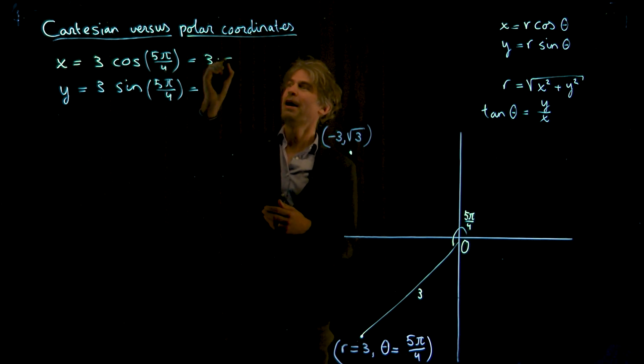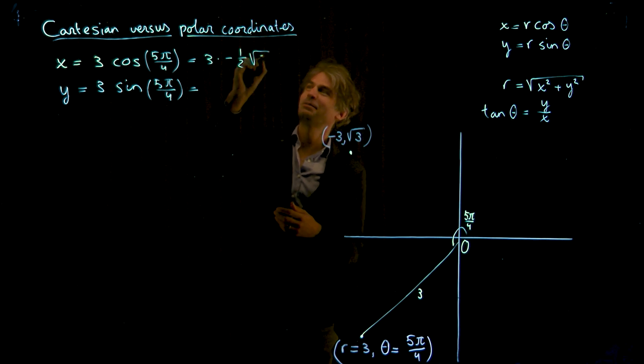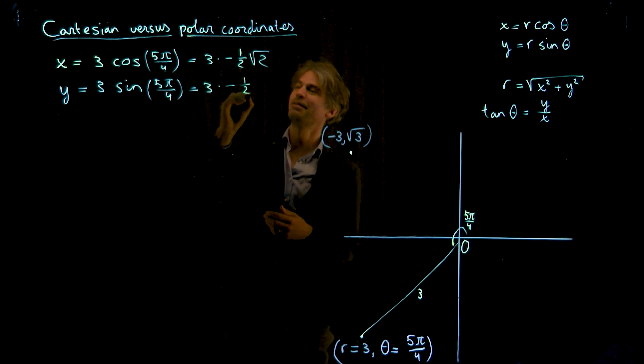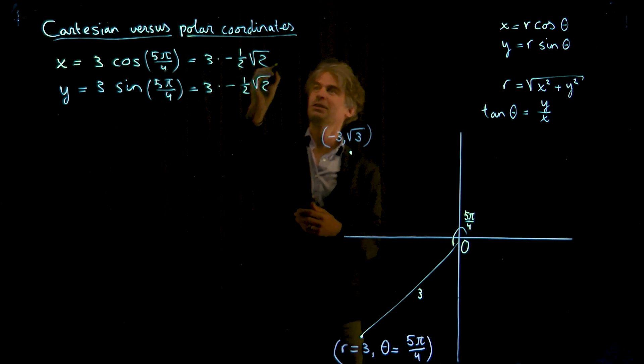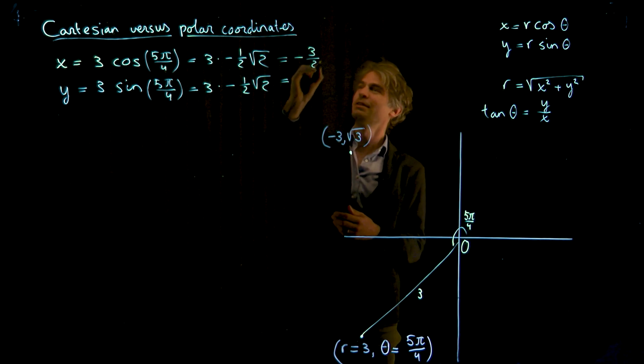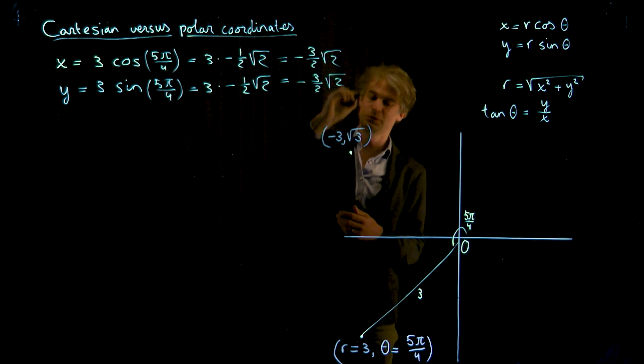You get 3 times minus 1 half square root of 2. And here you get 3 times the same actually, minus 1 half square root of 2. So the outcome would be minus 3 over 2 the square root of 2. And here they say minus 3 over 2 the square root of 2.